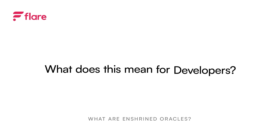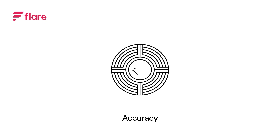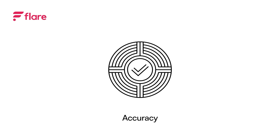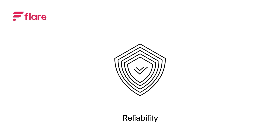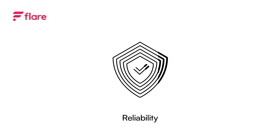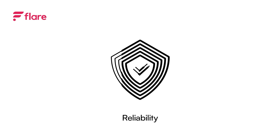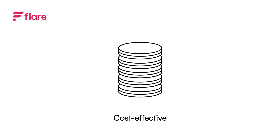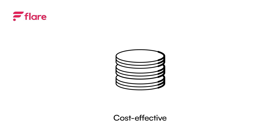What does this mean for developers? First, accuracy — confidence that this data is correct, up-to-date, and hasn't been manipulated. Second, reliability — so the data is there when it's needed without fail. Finally, cost-effective — applications built on Flare have access to data free of charge.